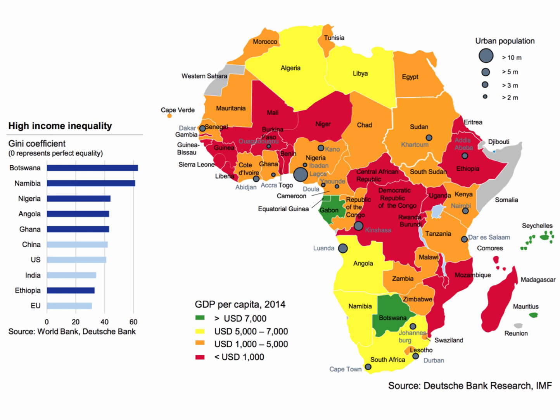There's a whole cluster of countries between $5,000 and $7,000, and then lots of countries in orange — lower middle income countries between $1,000 and $5,000. Of course, you can divide by $3.65 to get the approximate dollar per day figure. And then you have countries in red — very poor countries where their per capita income is still less than $1,000 per year. Divide by $3.65 to get the equivalent dollar per day. So lots of absolute poverty is still in sub-Saharan Africa.